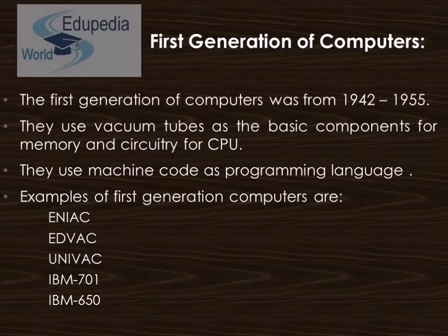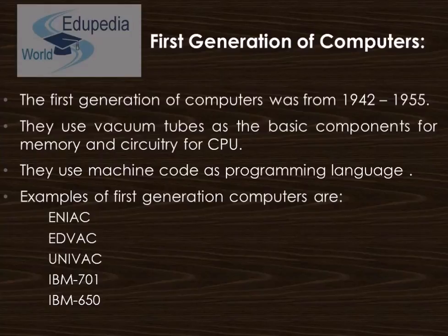These were the first to use binary operations. Then comes the Universal Automatic Computer, which was the first mainframe computer for general business use. Then the International Business Machines 701 system was introduced, also nicknamed 'Big Blue', designed for scientific work and research. Then comes the IBM System 650, which was IBM's as well as the world's first successful commercial computer.